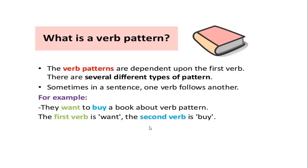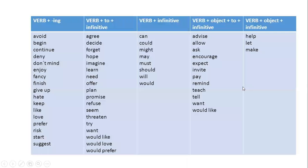Okay, but like 'enjoy' — 'I enjoy dancing.' So 'enjoy' plus verb-ing. This is also part of the verb pattern. Now let's check here — these are all some of the other verb patterns.